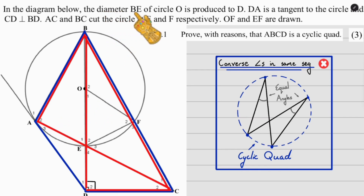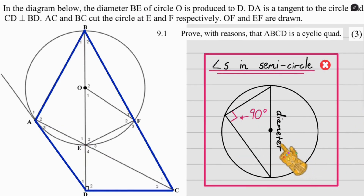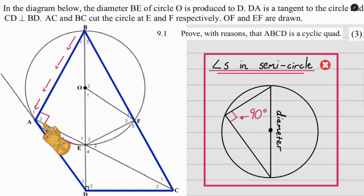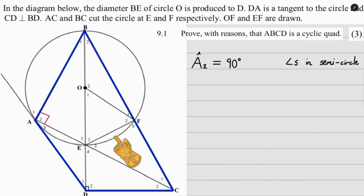This links to the fact that BE is a diameter. One of the Euclidean theorems states that if you follow a diameter down to the circumference, you get a 90-degree angle. Following diameter BE down to the circumference takes us to A2, so A2 is 90 degrees — reason: angles in a semicircle. We can now see both bowtie angles, A2 and D2, match up, so we state A2 equals D2 equals 90. No reason is required for that linking line.